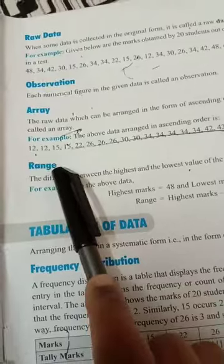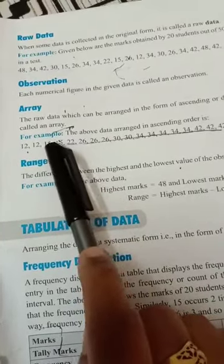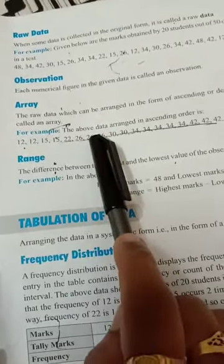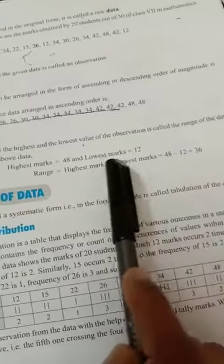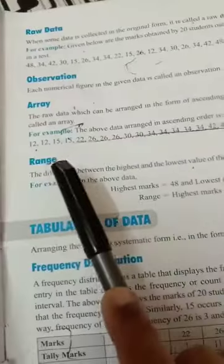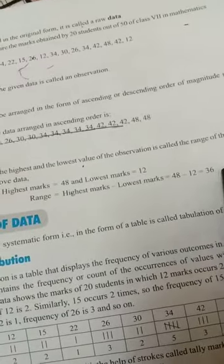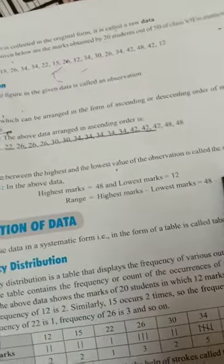Range - what is range? First you have to arrange the data in ascending order. After that, highest number minus lowest number - the answer you get is your range. For example, the highest number is 48 and lowest number is 12. 48 minus 12 gives you 36. That is the range of the data. These are important concepts.